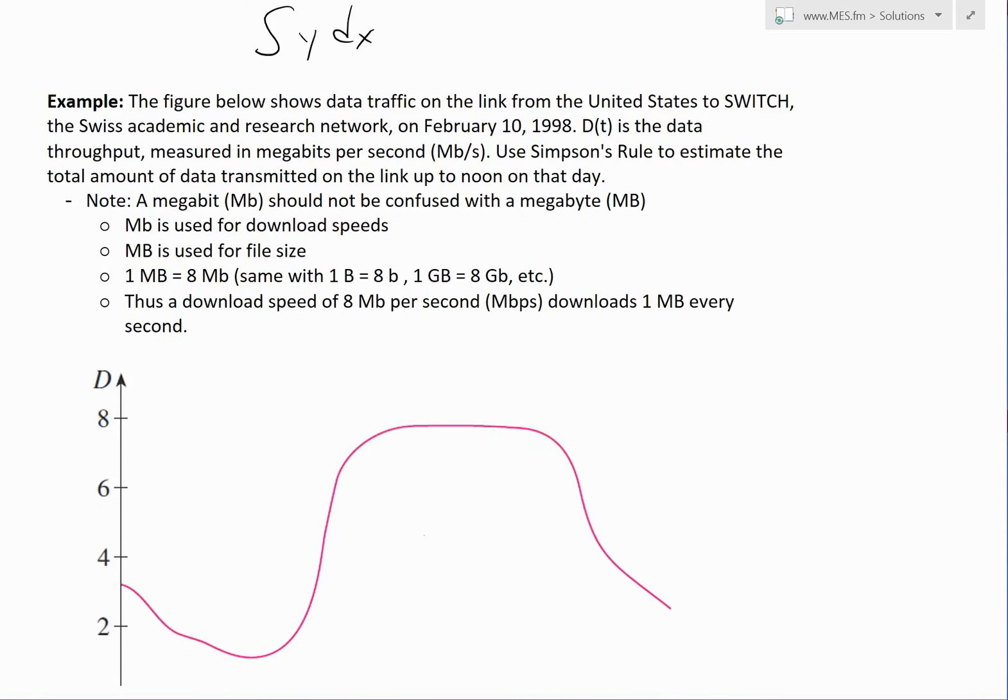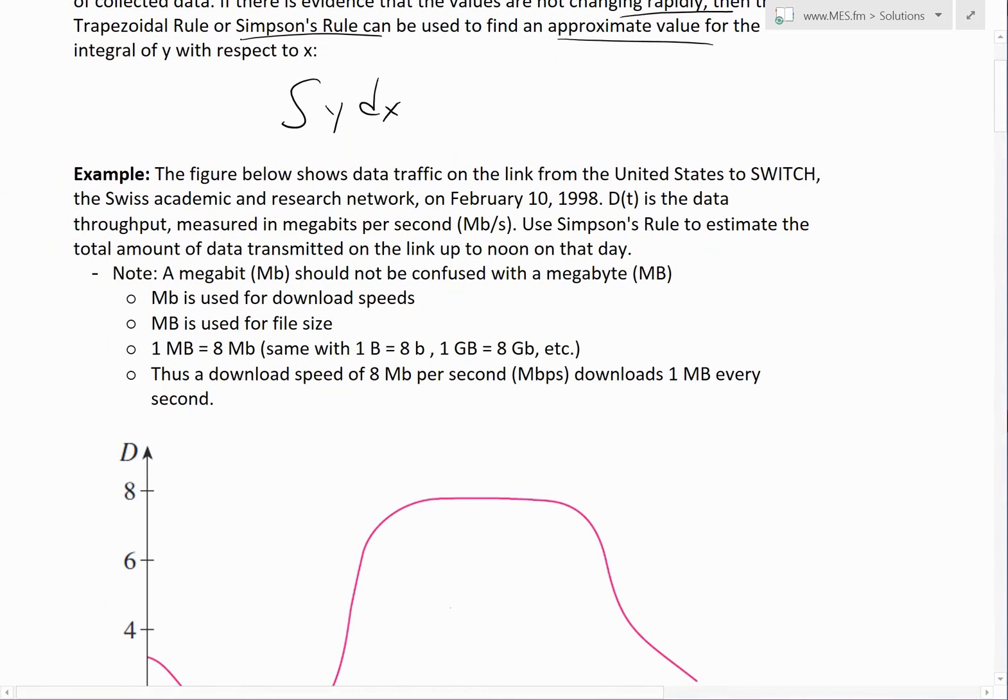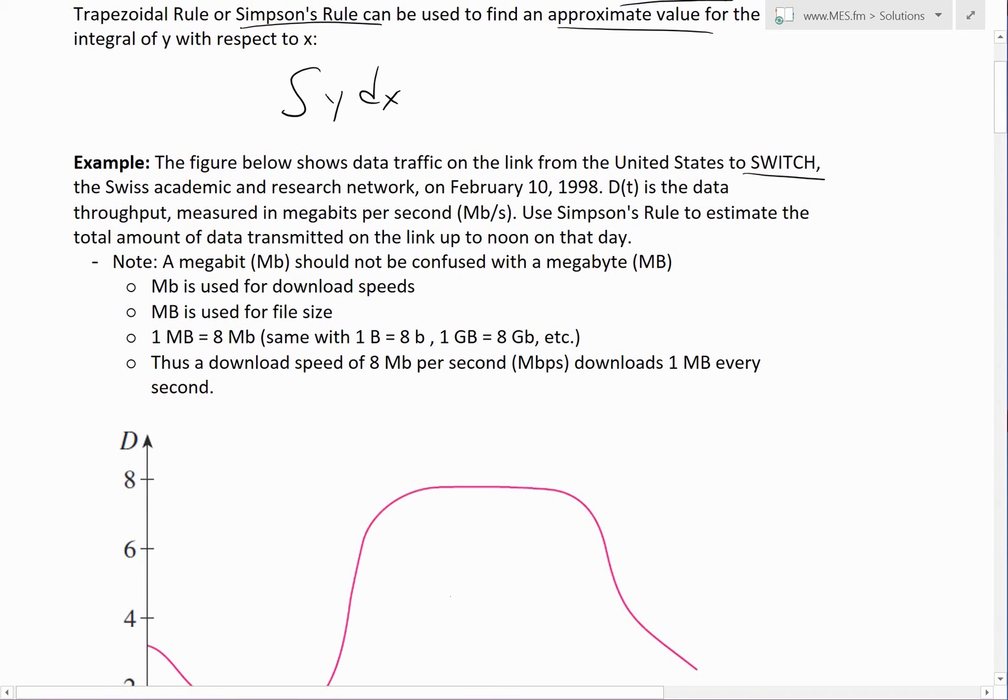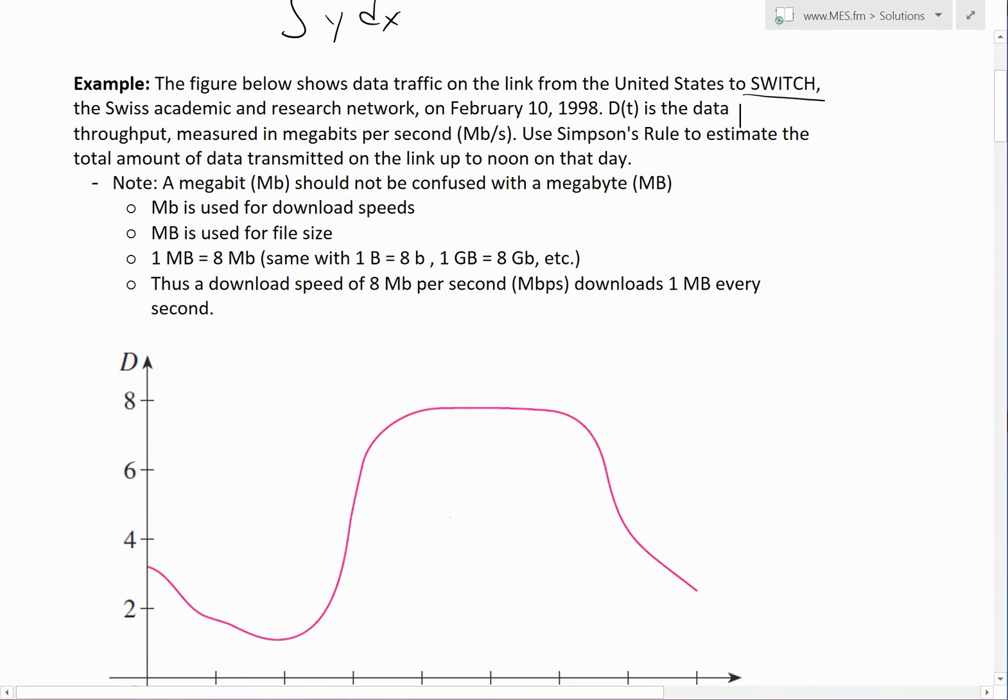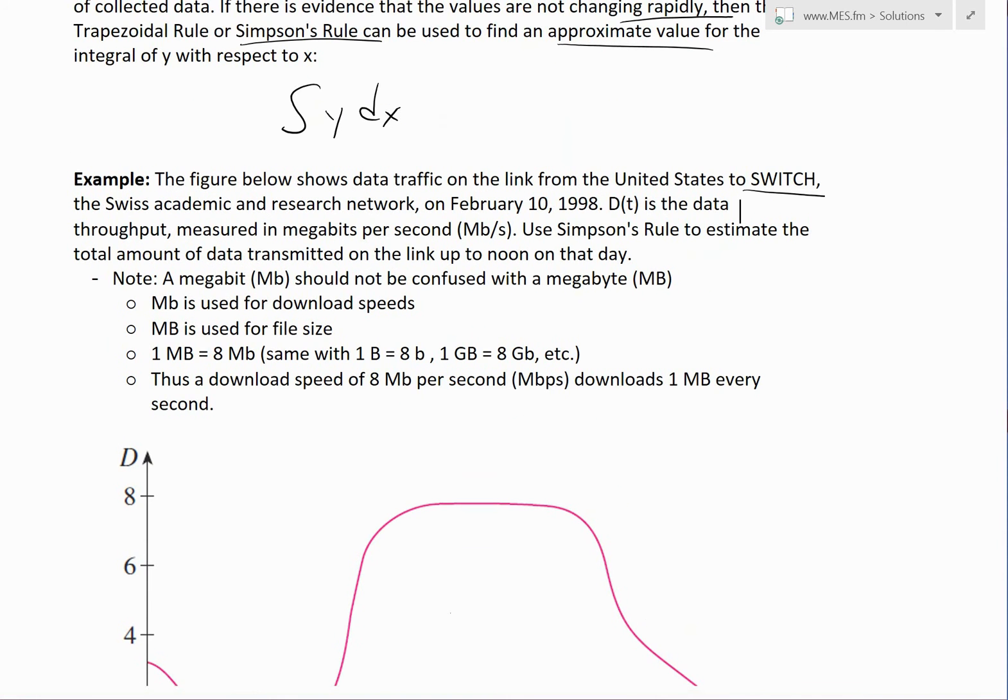We're not given a formula here. This example states: The figure below shows data traffic on the link from United States to SWITCH, which is a Swiss academic and research network, on February 10th, 1998. So this is a while ago, this was in my calculus textbook. So the numbers here are not actually that big because it's a while ago, and technology and storage space and download speeds have increased greatly.